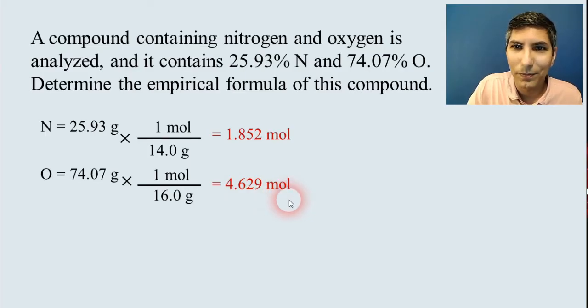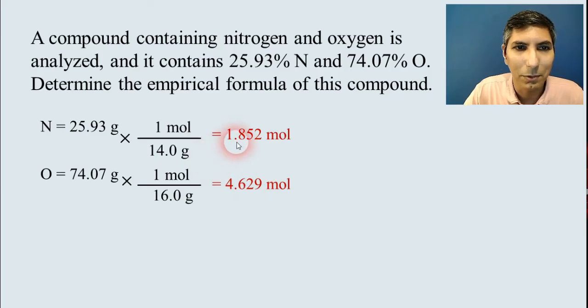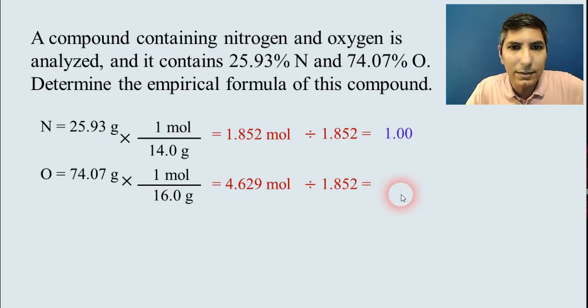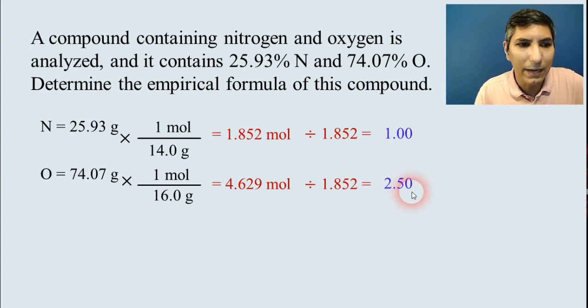And what's the next step? We have to take both of these mole values and divide by the smallest or the smaller of those two in this case. So that's 1.852. So, of course, this first number is going to be a 1. And when I key this into my calculator, I get 2.50.